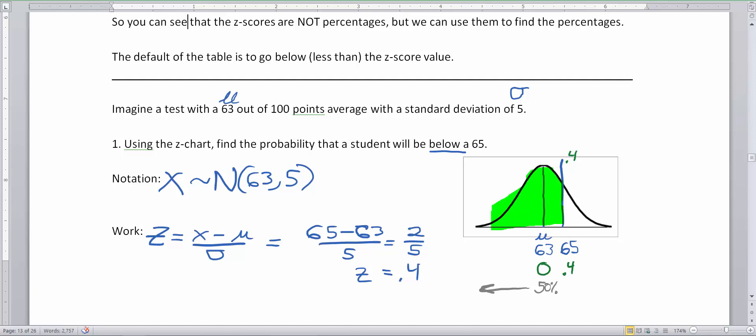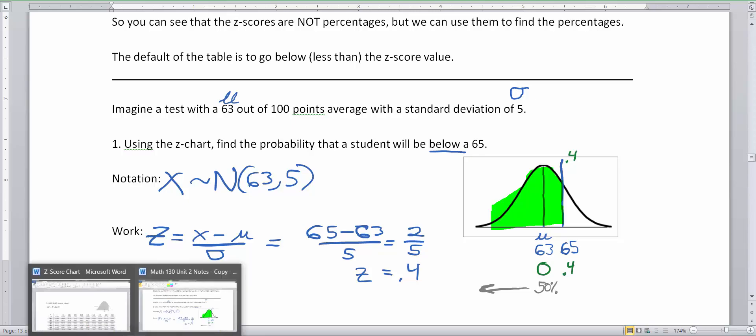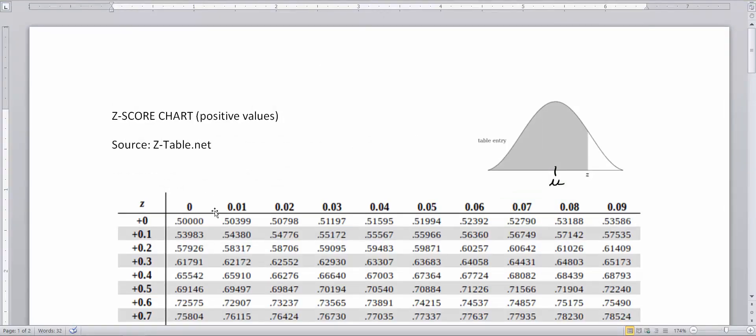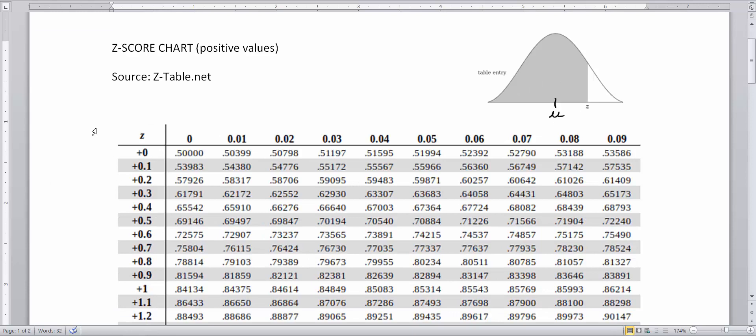Now let's go look at our chart. We're looking up a z that is 0.40, so we're going to go to the positive values. I am looking for 0.4, and 0.4 is here. You'll notice that 0.4 didn't have any decimals after it, so technically it's 0.40. This is my table value. 0.65542, or I like to round it to three decimal places, 655 thousandths, is going to be the percentile at 0.4 z-score.